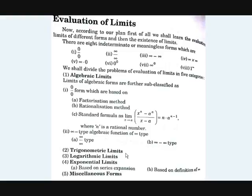Next, trigonometric limits contain trigonometric identities and ratios like cosine, sine, tangent, and logarithmic limits. In logarithmic limits, we discuss logarithms and how to find the value at a particular limit. Next, exponential limits deal with exponents. There are two types based on series expansions learned in the previous video, or based on the definition of e, and miscellaneous forms.